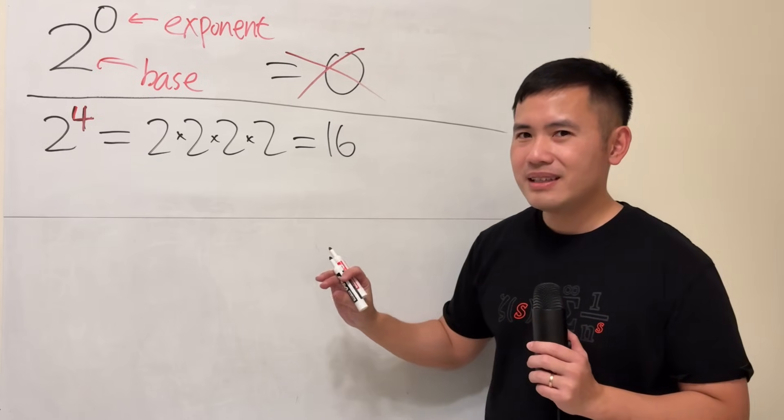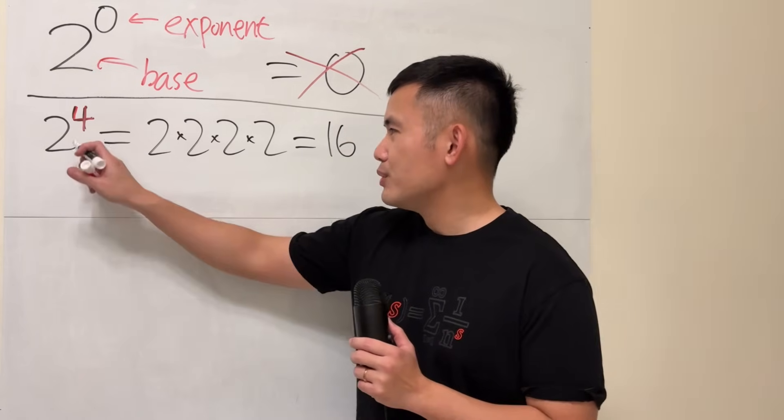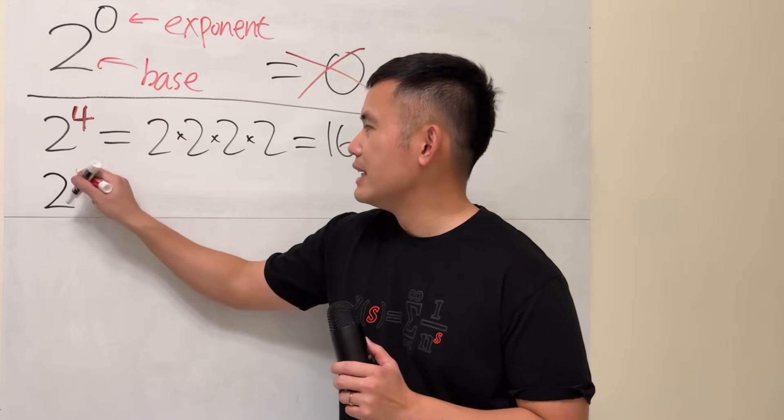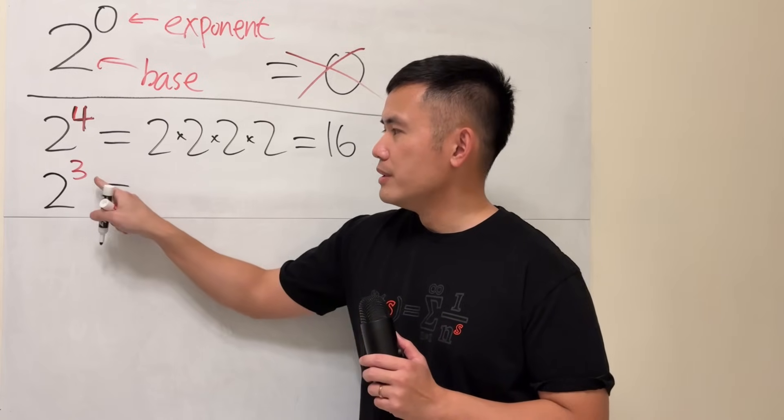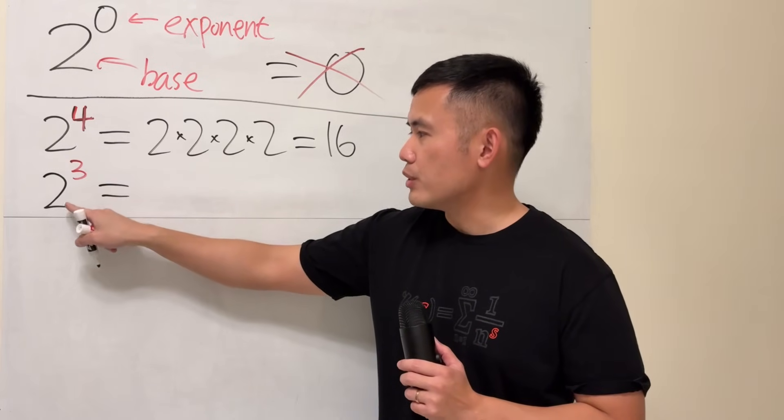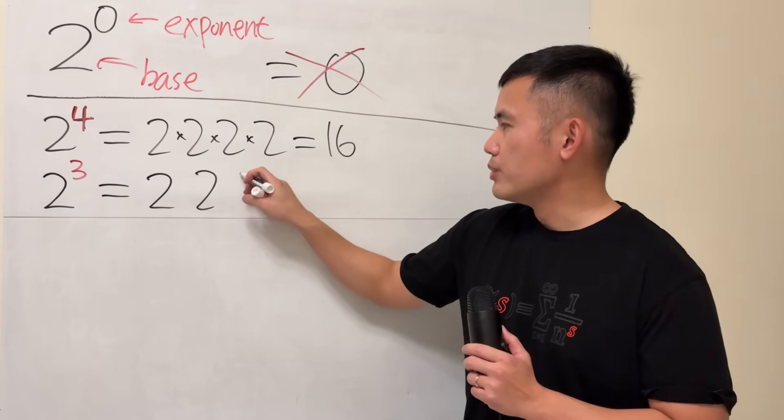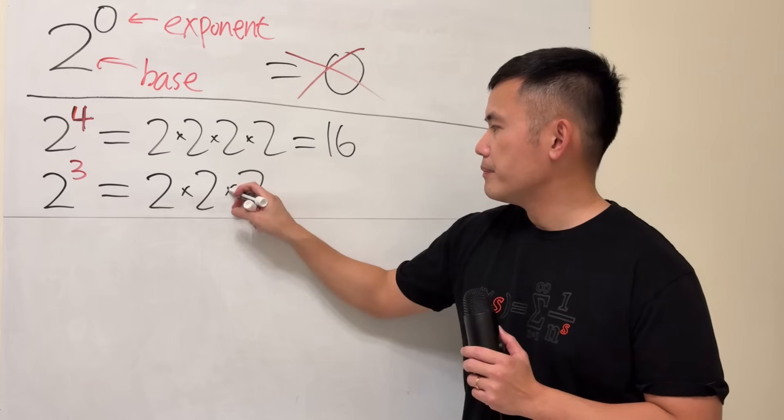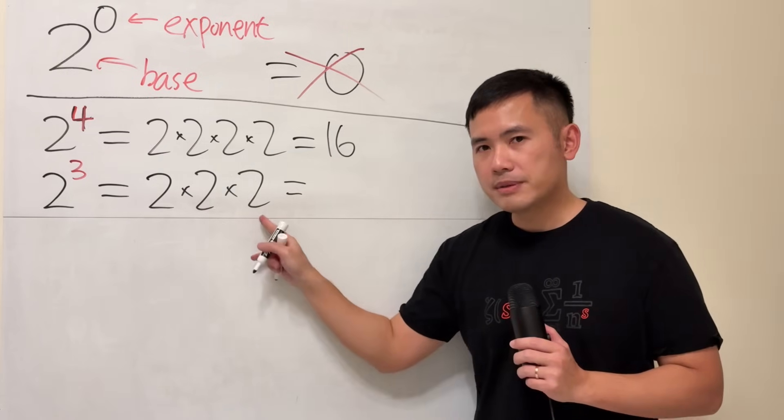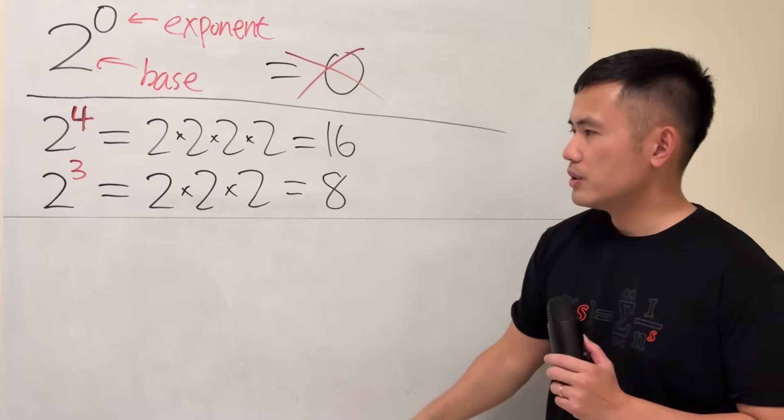Why don't we try some other numbers? Instead of 2 to the fourth power, let's look at 2 to the third power. Now, this 3 means that we write down the 2 3 times, 2, 2, 2, and then we multiply them. 2 times 2 is 4, times another 2 is 8. Good.